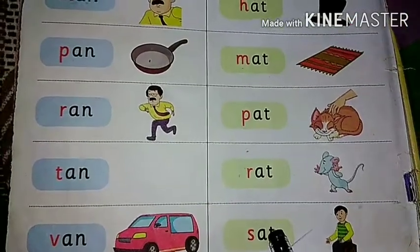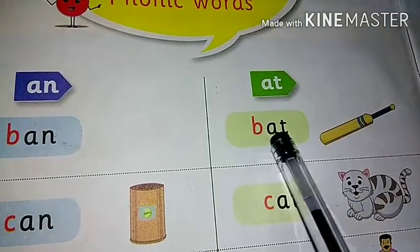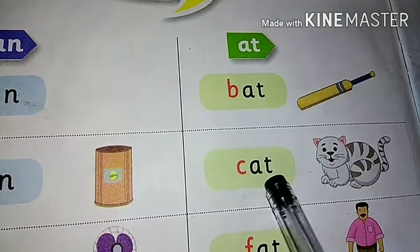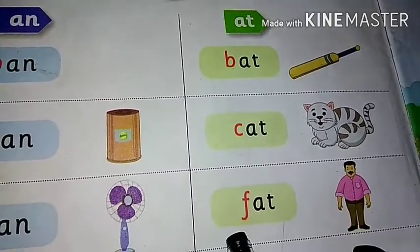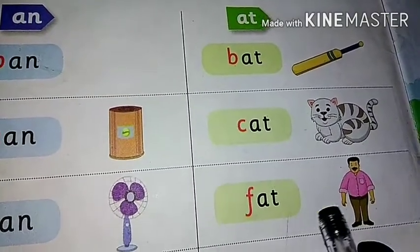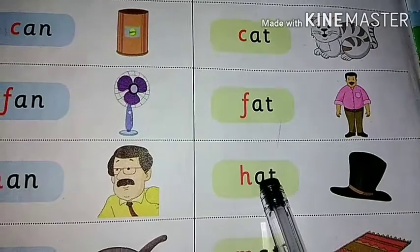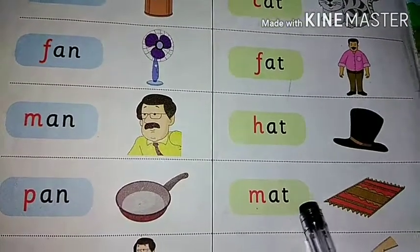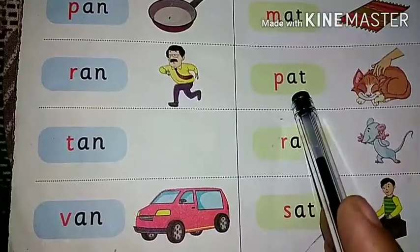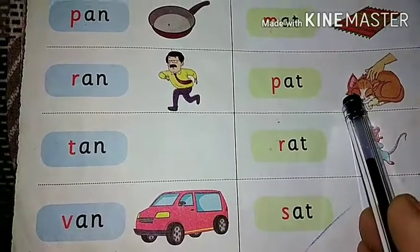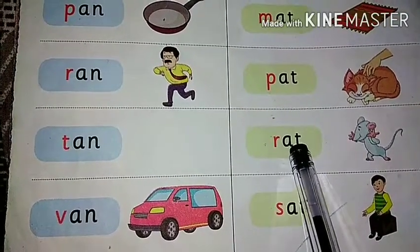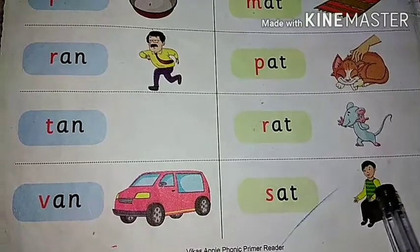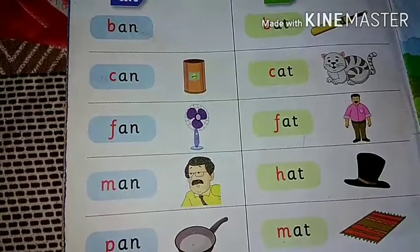We will revise the -at words again. B-at — bat. K-at — cat. F-at — fat. H-at — hat. M-at — mat. P-at — pat. R-at — rat. S-at — sat.